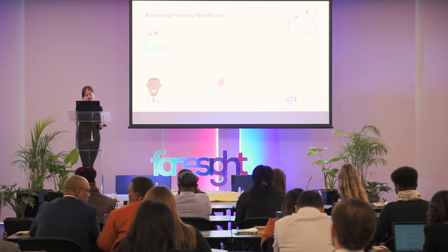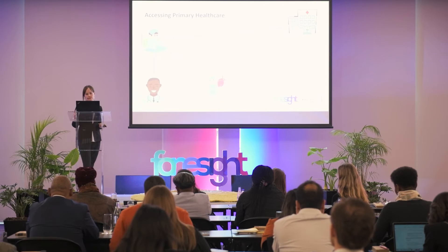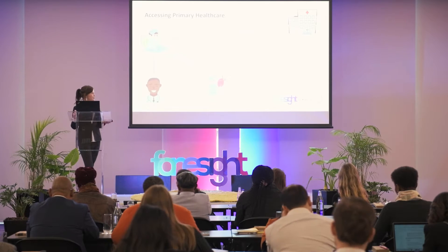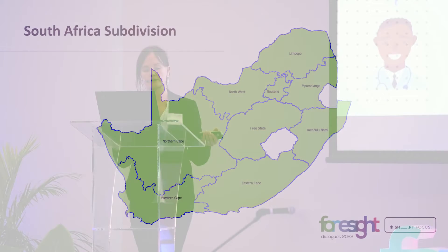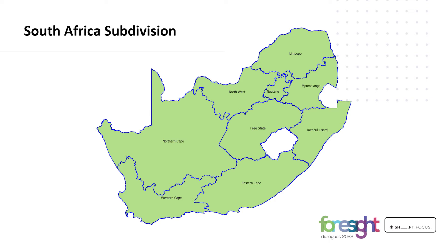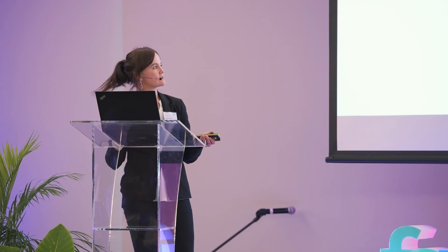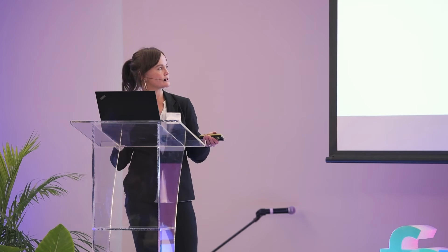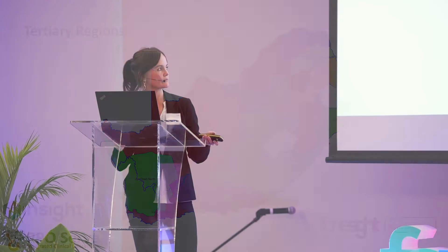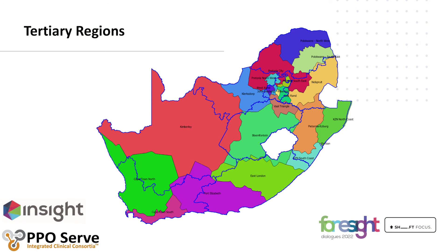We can subdivide South Africa beyond the provincial borderlines into primary level regions, secondary regions and tertiary regions. Starting with the first view — tertiary regions — we can define or split South Africa into tertiary regions based on tertiary levels of care.